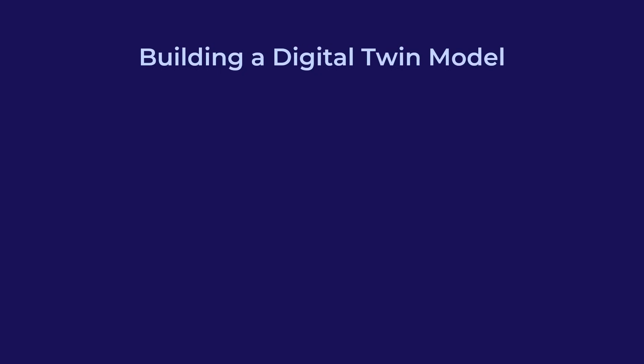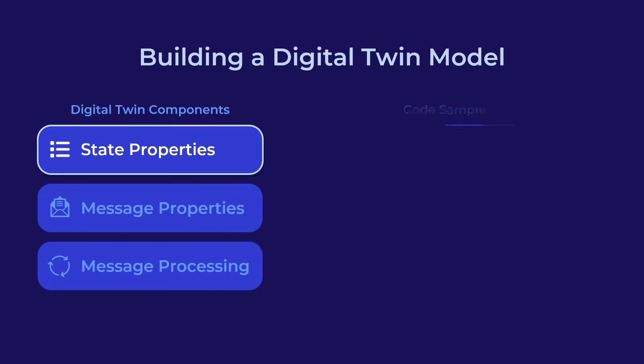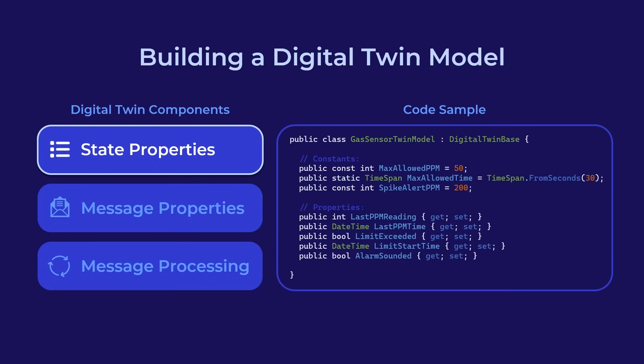After you've installed the APIs and workbench for your preferred language, it's time to build the digital twin model. First, define the state properties for each instance. State properties store dynamic information about the gas sensor that the digital twin is monitoring.